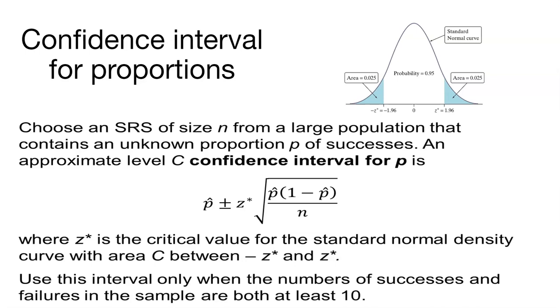If we can do a hypothesis test, we can also calculate a confidence interval. And we can do that for proportions. So here, again, we're relying on the fact that we've done a simple random sample of some size n from a large population. We can find a confidence interval for that proportion.